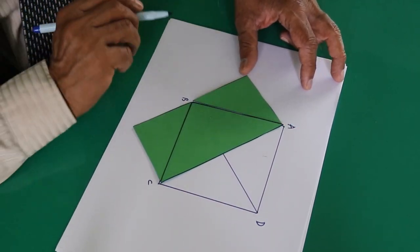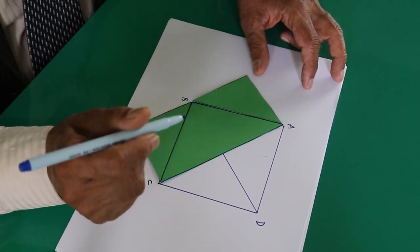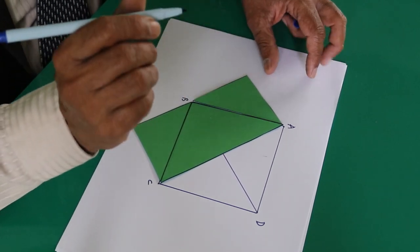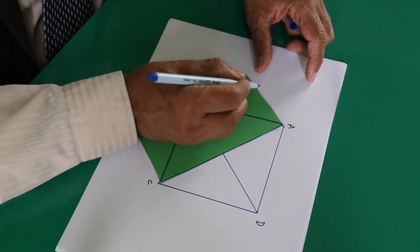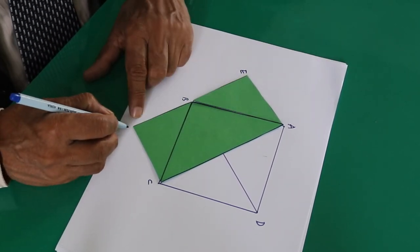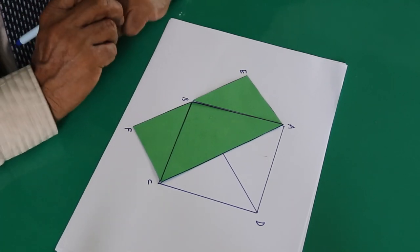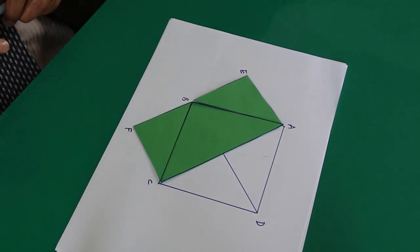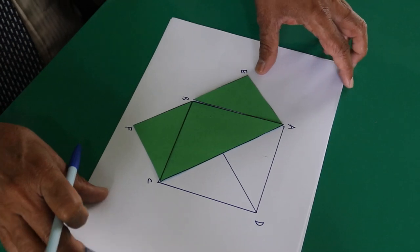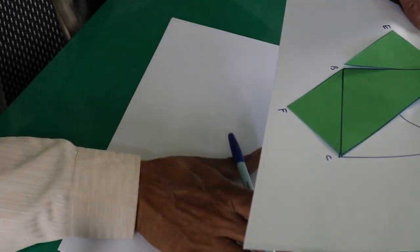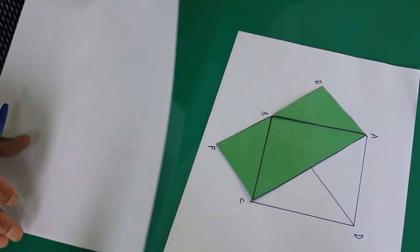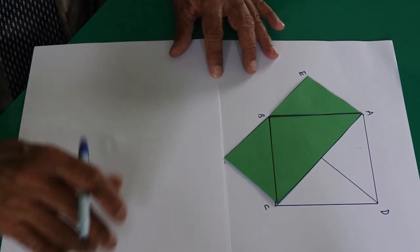Now the square has been transformed into a rectangle. Let the name of this rectangle be AEFC. After this, we will explain the procedure and go to the generalization.